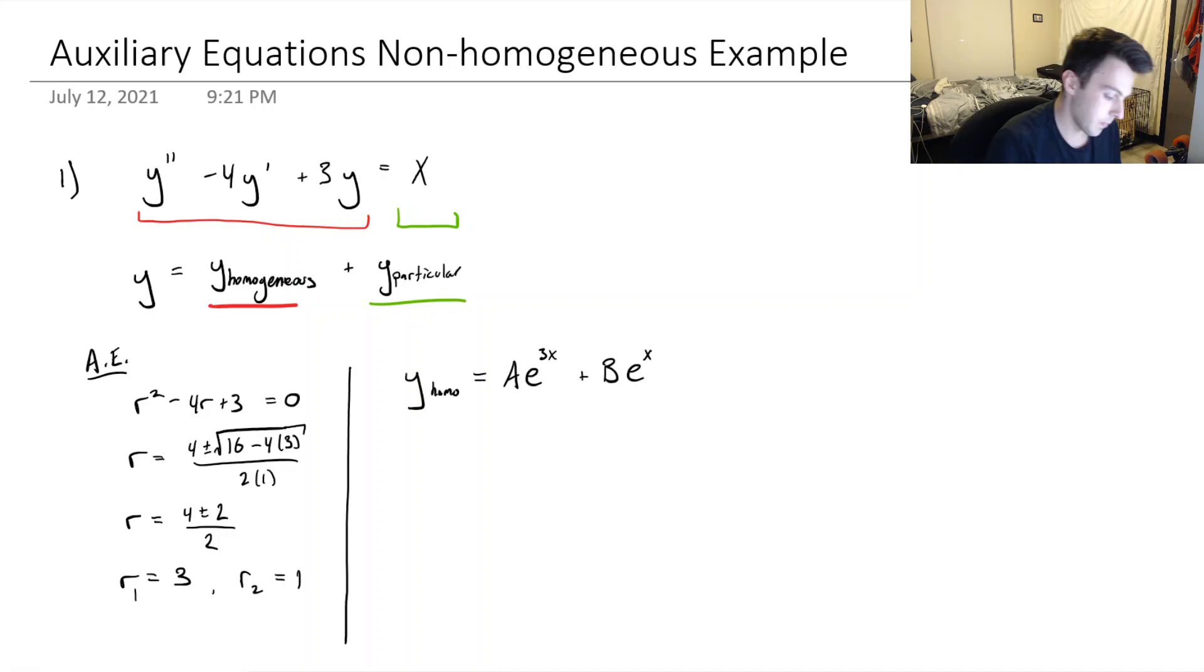So now we need to find the particular solution. And essentially what we do is kind of similar to how we get the homogeneous solution. But instead of assuming that the solution is going to take the form of e to the something x, we're going to take a look at what the right-hand side is of our ODE. And that's going to essentially tell us what would be a good idea for us to assume that the solution would be of the particular part.